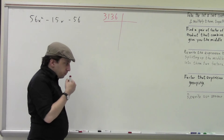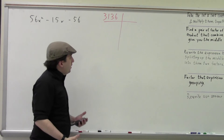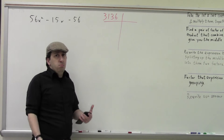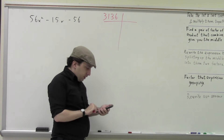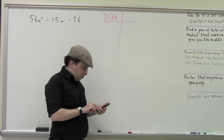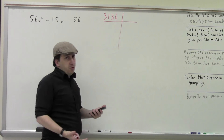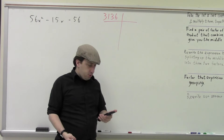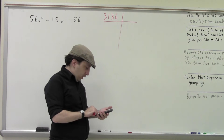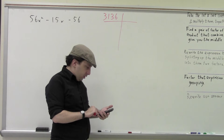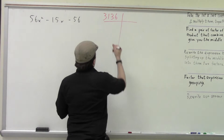So rather than starting at 1, I'm going to start at something bigger, like 6. Using my calculator, I see that 3136 is not divisible by 6, so I have to try something else. Let's try 7 — so 7 and 448.